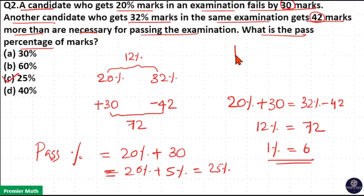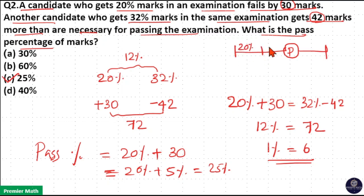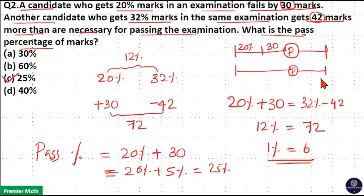If you have doubt, if 25% is the pass percentage, then one candidate gets 20 percentage plus 30 marks — if he gets 30 more marks, he will pass the examination. The other candidate gets 32 percentage in the examination, so he gets 42 more marks than the pass percentage.